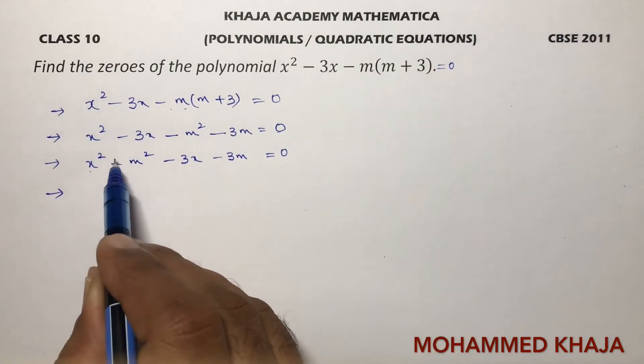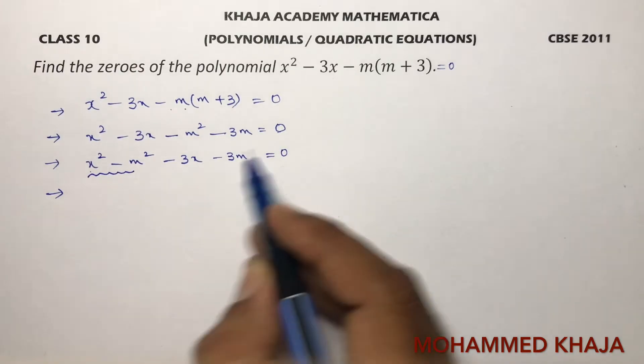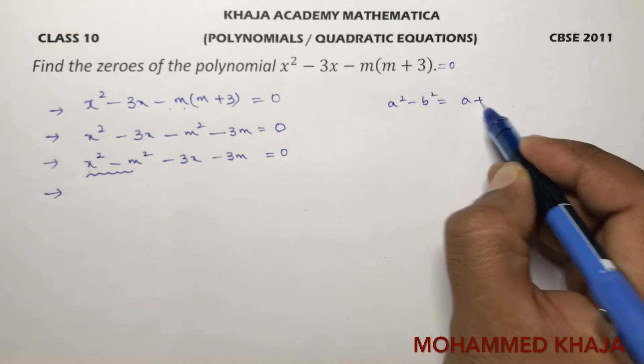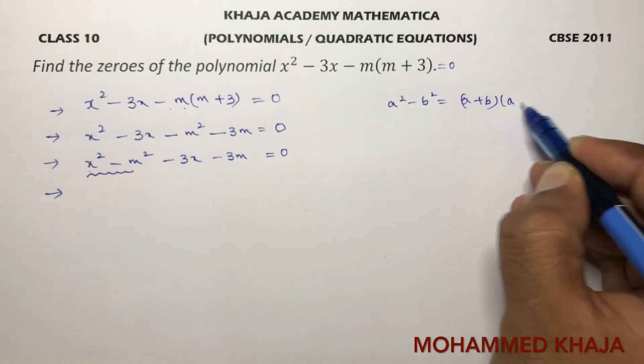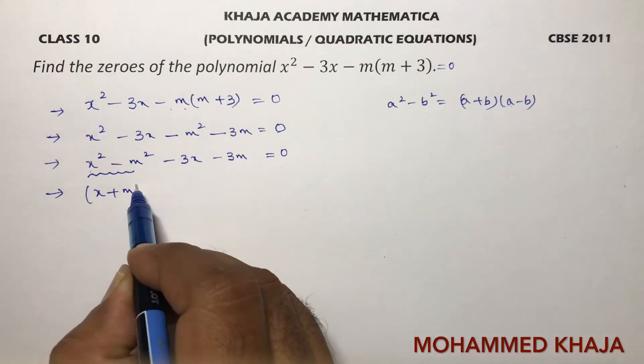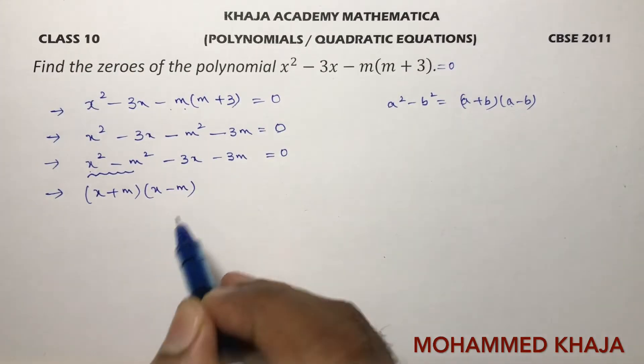In the next step, this is in the form of a² - b². a² - b² is (a + b) into (a - b). So here I can write as (x + m) into (x - m).